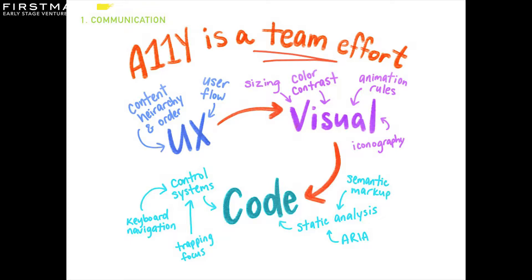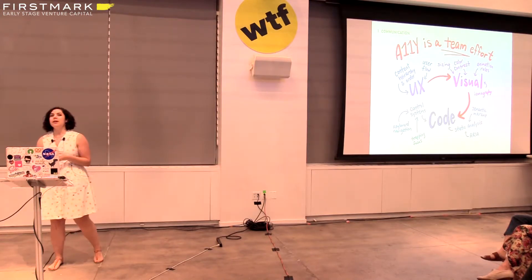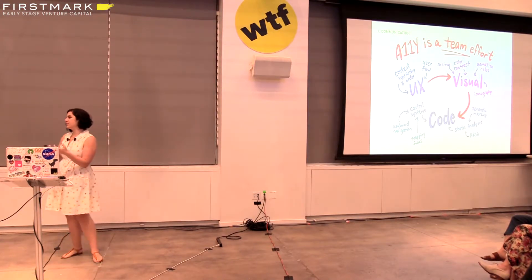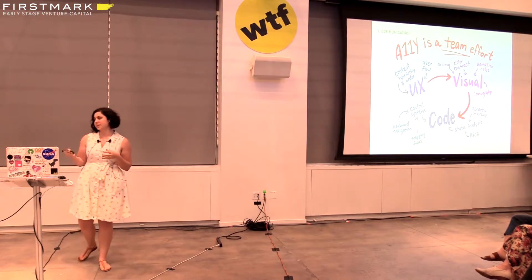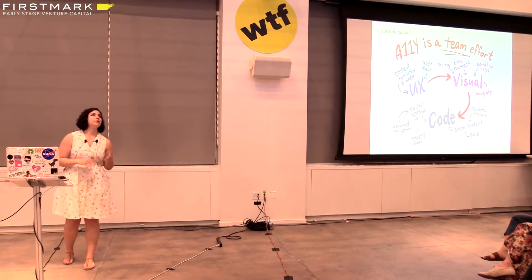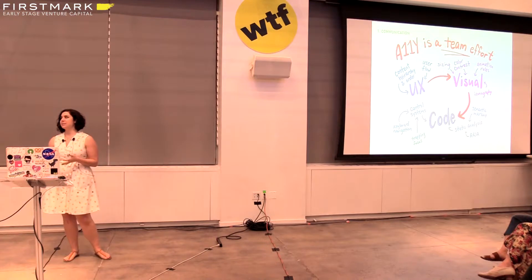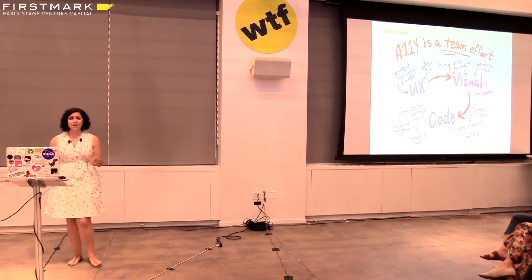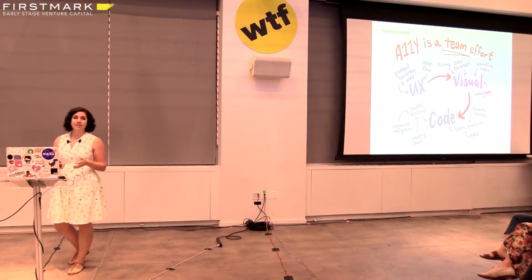Here are a few examples where that holds true. In UX this is content hierarchy and order, user flow, where you have captions in your images, where you have alt text. For visual design this is everything from sizing buttons to sizing text, from color contrast to animation rules — making sure that because some people have vestibular disorder you can't have animations play at a really fast rate. With code there's keyboard navigation, trapping focus on certain elements, static analysis like ARIA labels and semantic markup. There's also having captions with your videos and other things the WCAG requires.